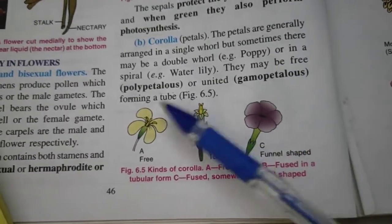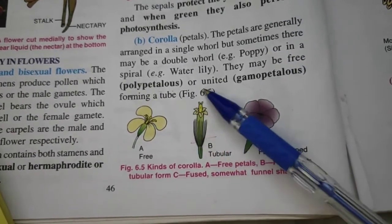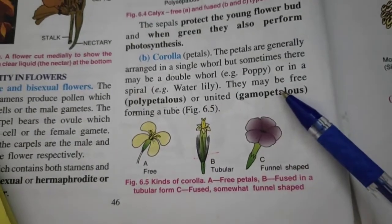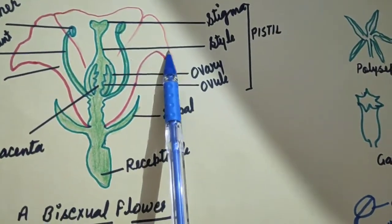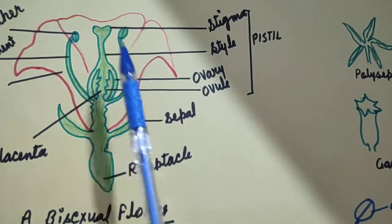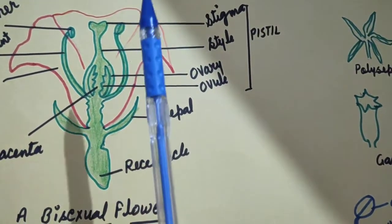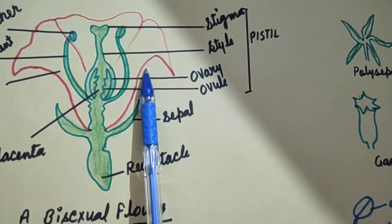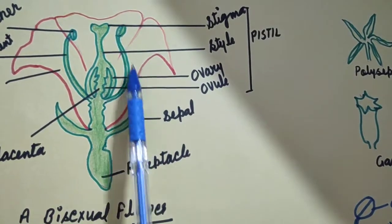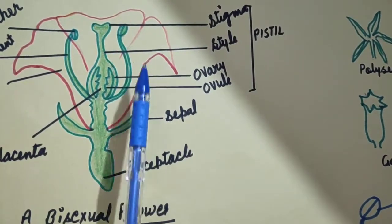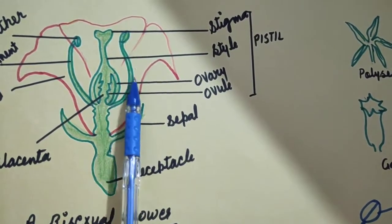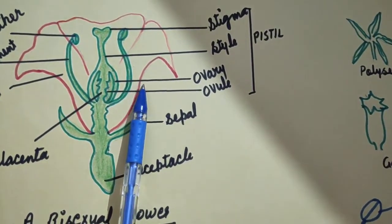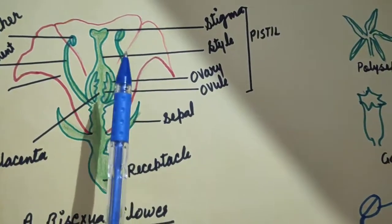When petals are free, they are polypetalous. And when they are united, they are gamopetalous. What is the role of petals in a flower? As petals are colored and attractive, they attract insects for pollination. They also protect stamens and pistils, especially when the petals form a tube.